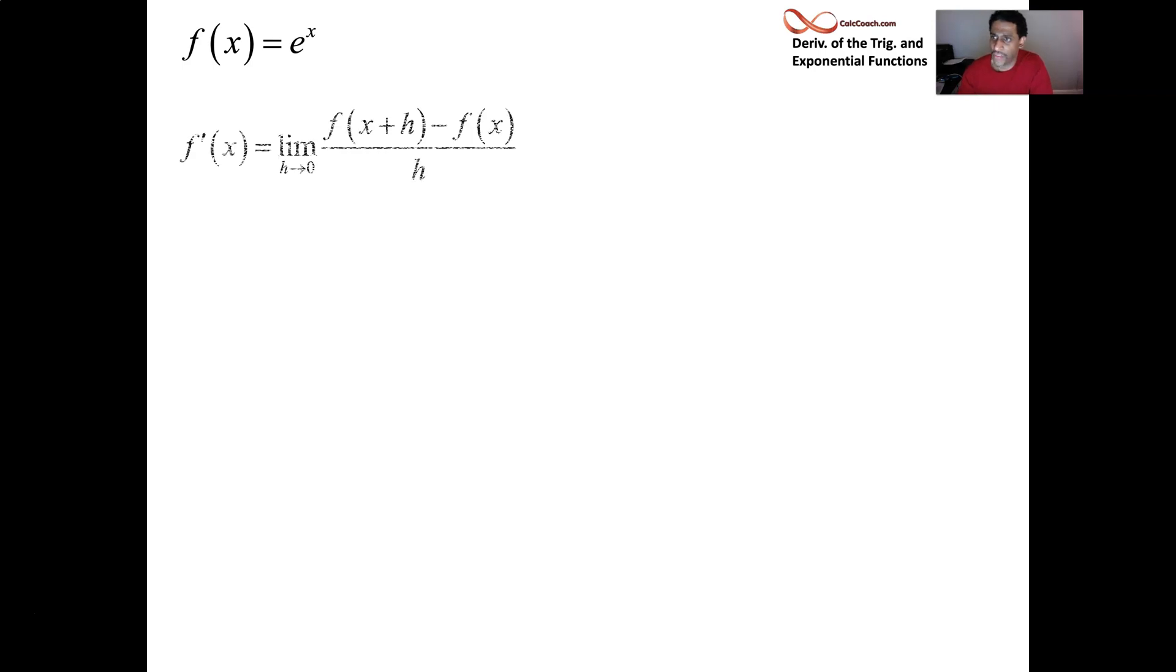Using the definition of the derivative, we have f of x plus h minus f of x all divided by h, limit as h goes to zero. And our function is e to the x. So we have e to the x plus h minus e to the x all over h, taking the limit as h goes to zero.